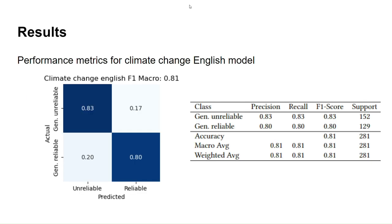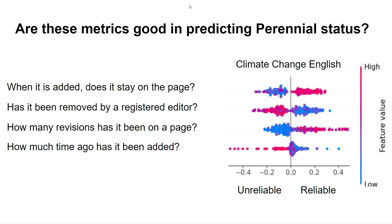What we want to study is whether there is a difference in editor behavior toward reliable and unreliable sources. We see that indeed this approach is promising. For instance, in climate change English, our model achieves an F1 macro score above 0.8, and similar results are obtained for all topics. When looking at the metrics, we see that many of these align with source reliability. For instance, if a source is added to a page and stays there for a long time, that is a good indication that it is reliable. On the other hand, when it is added and then removed by a registered editor, that can be a good indication that the source is unreliable.